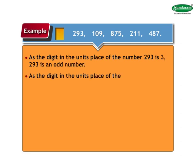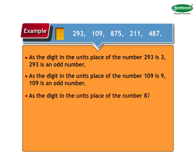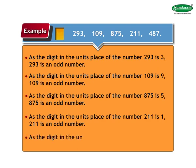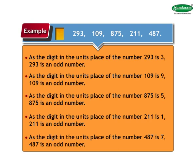As the digit in the units place of 109 is 9, 109 is an odd number. As the digit in the units place of 875 is 5, 875 is an odd number. As the digit in the units place of 211 is 1, 211 is an odd number. As the digit in the units place of 487 is 7, 487 is an odd number. Wasn't this as simple as even numbers?